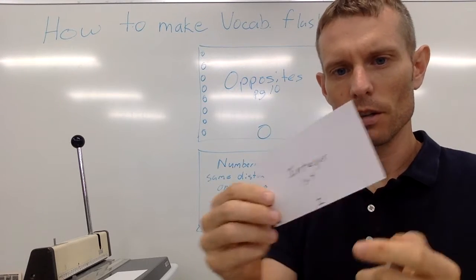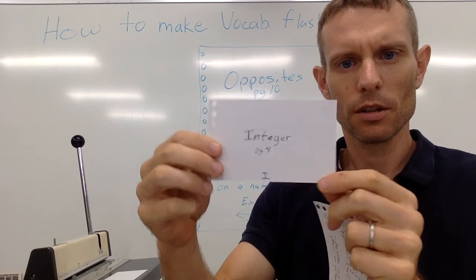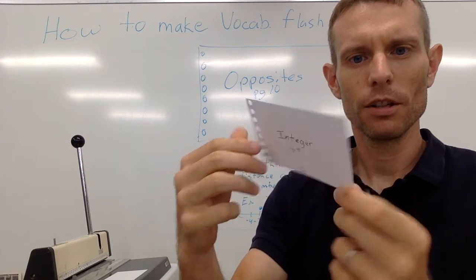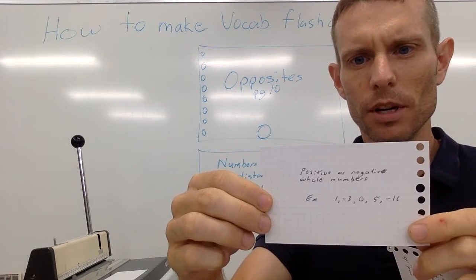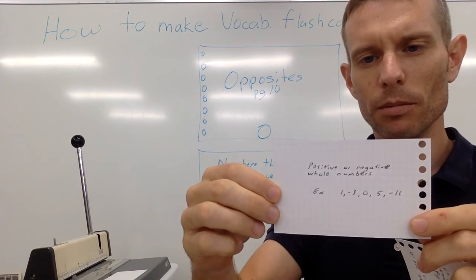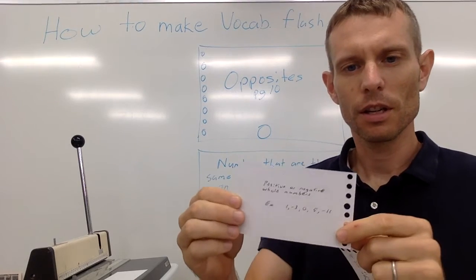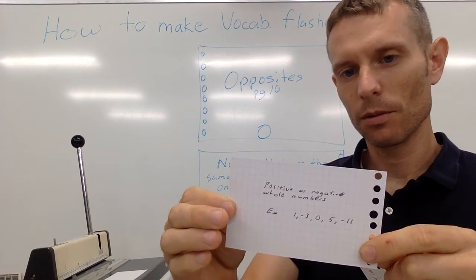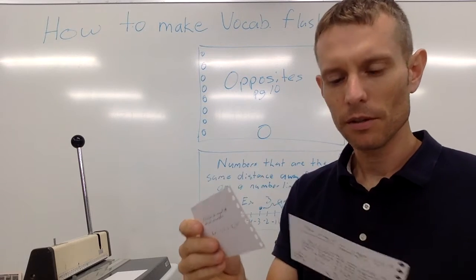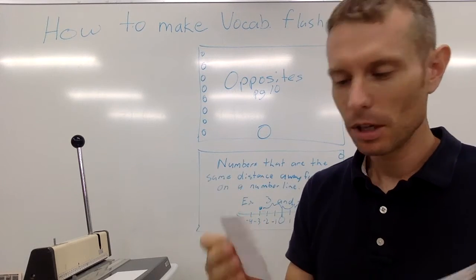and here is another one: integer. Oops, it's all crooked. Integer, and you see positive or negative whole numbers, there are some examples. So again I could use this to study. I could look at this one and try to think of the word integer. So what I simply did was after I made my flashcards, or you can make